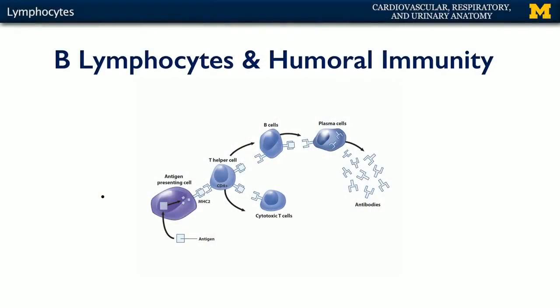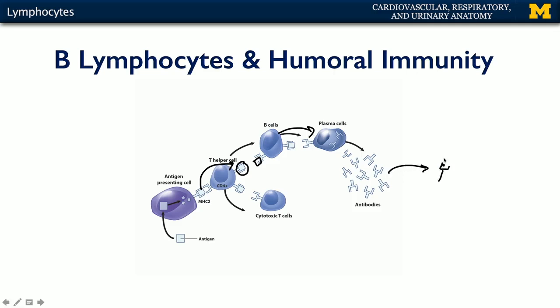B lymphocytes can also be activated by T helper cells, though not all are necessarily activated this way — it is a very common pathway. The T helper cell shares the antigen received from the antigen-presenting cell. The B cell has a surface membrane receptor that can interact with that antigen, and then it matures into a plasma cell. Plasma cells shed antibodies, or immunoglobulins, which go out and whenever they find the antigen signature of a pathogen, they're able to destroy it through various means.